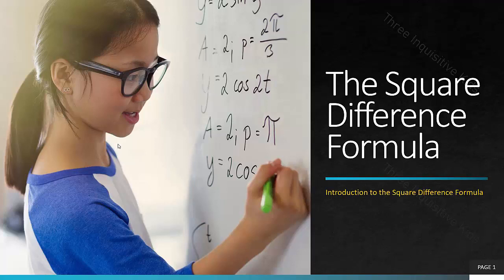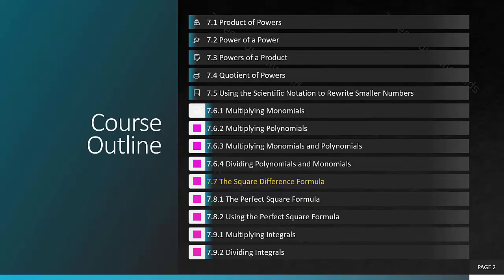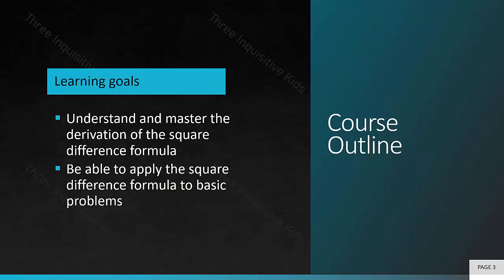Welcome back to 3 Inquisitive Kids. In this video, we'll be learning about something called the square difference formula. Our course outline for this unit started with the laws of exponents, then scientific notation and multiplying and dividing polynomials and monomials. Today we're going to start learning our formulas, and the first one is the square difference formula. Our learning goals for today are to understand and master the derivation of the square difference formula, and be able to apply it to basic problems.